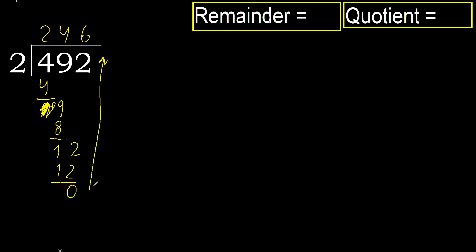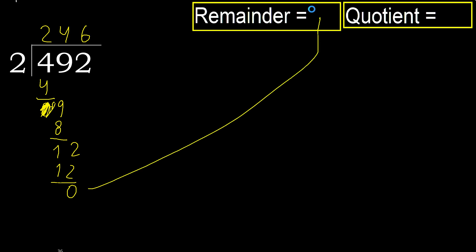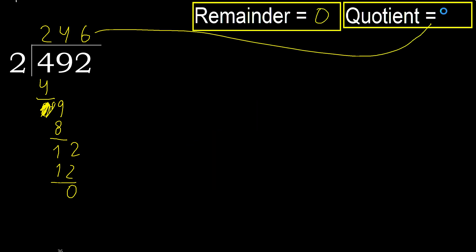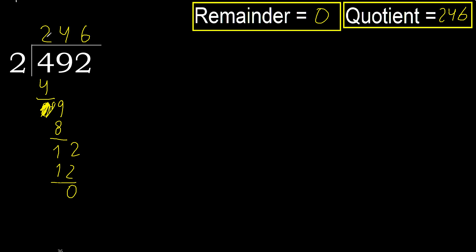That is not a number, therefore finish it. 492 divided by 2 is 246.